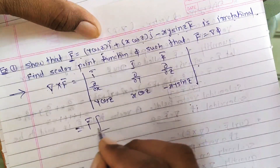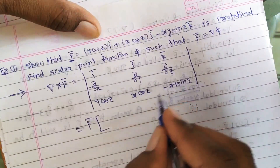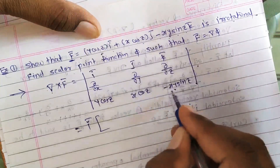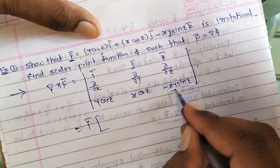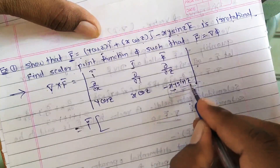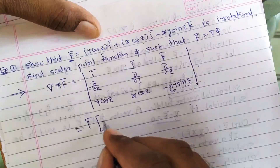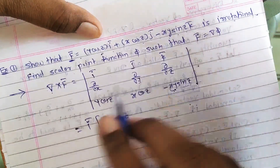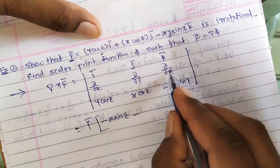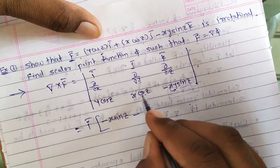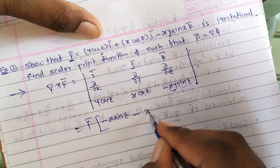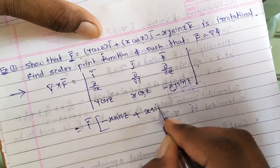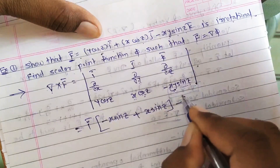Expanding: î times [∂/∂y(−xy·sin(z)) − ∂/∂z(x·cos(z))]. Taking derivative of −xy·sin(z) with respect to y, with x and z constant, gives −x·sin(z). Derivative of x·cos(z) with respect to z gives x·(−sin(z)) = −x·sin(z). So the î component is −x·sin(z) − (−x·sin(z)) = −x·sin(z) + x·sin(z).